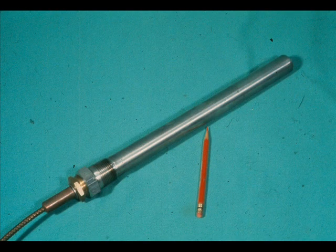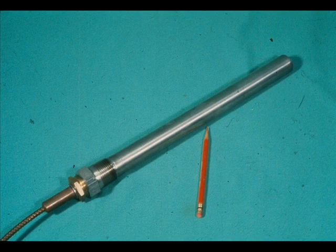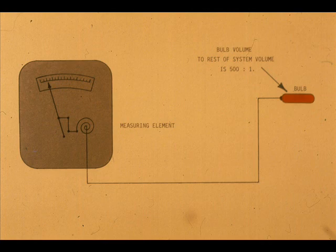For good performance, the volume of the bulb should be at least eight times that of the rest of the system. Some companies design their systems such that the ratio of the bulb volume to the rest of the system may be 500 to 1.